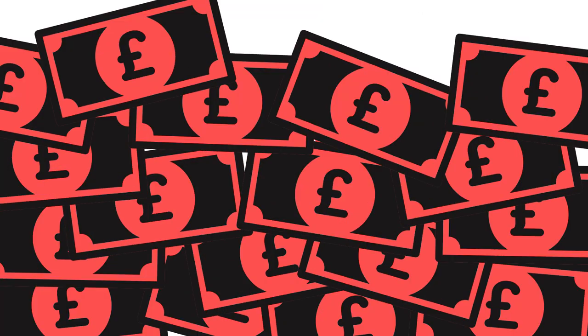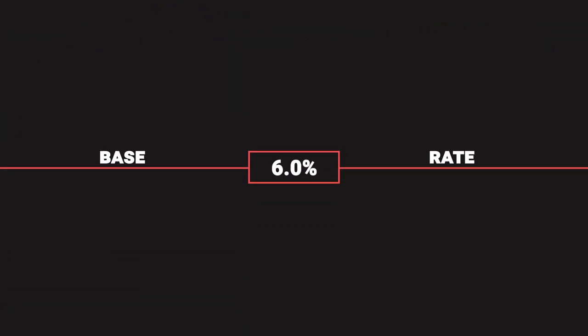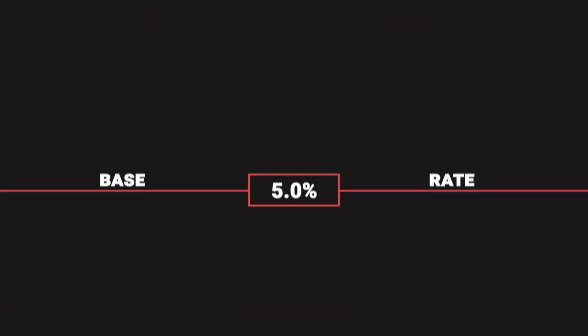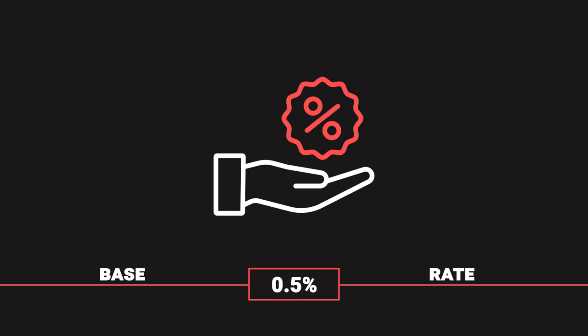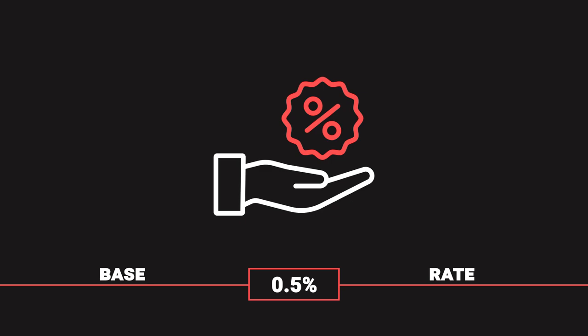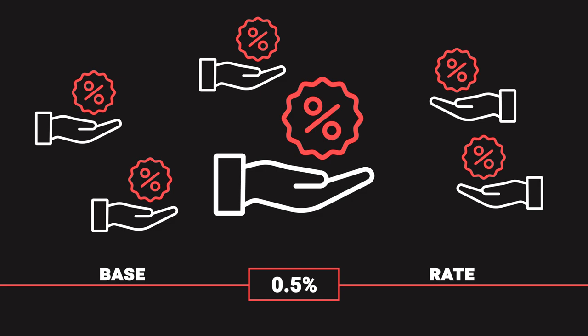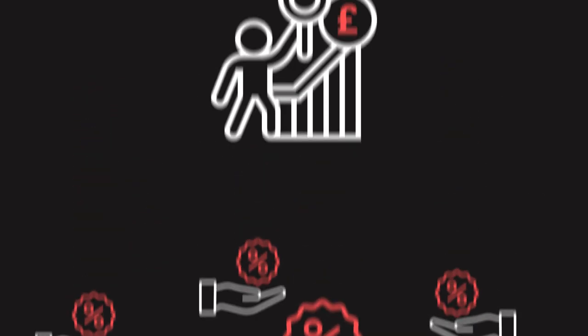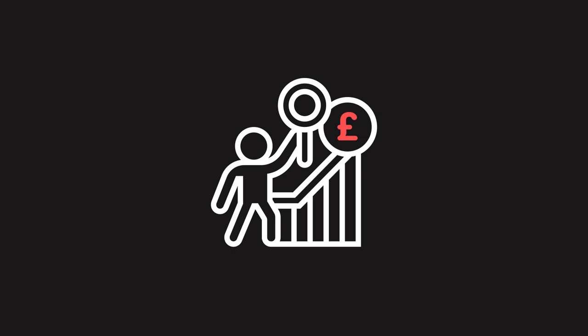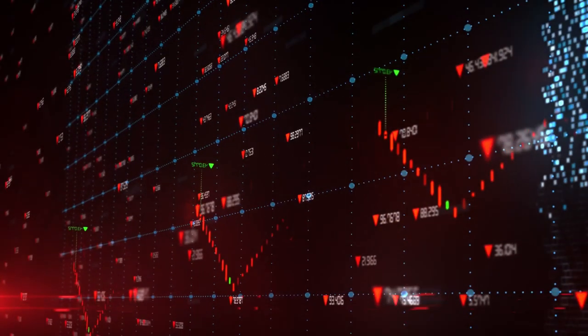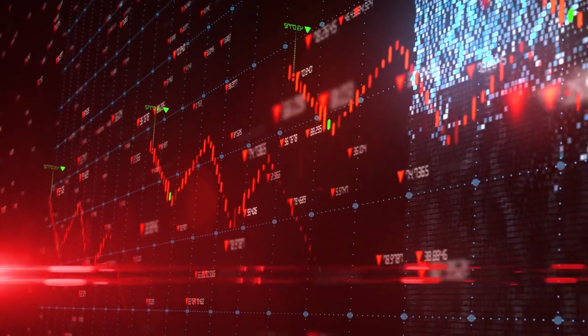The Bank of England doesn't actually produce the money directly for the most part — it encourages banks to make loans, and it's these loans that increase the amount of money in the economy. It does this by setting the base rate that banks can borrow at. The lower the base rate, the cheaper it is for banks to lend. Cheaper loans mean more people want to take out loans, so the Bank of England can, by a very indirect route, manipulate the amount of demand there is for money by setting the price of money.